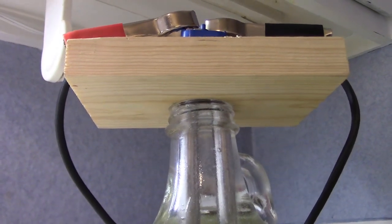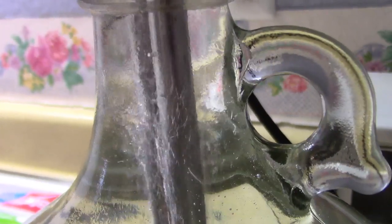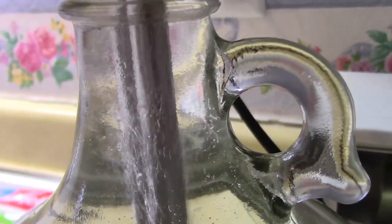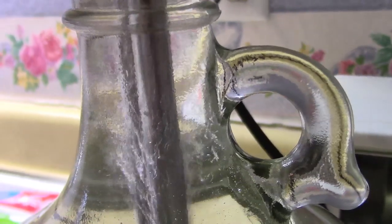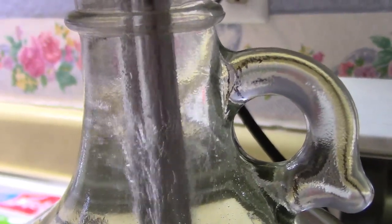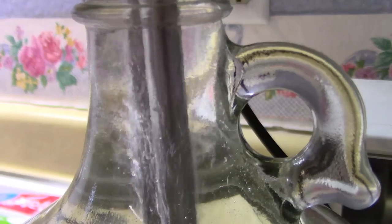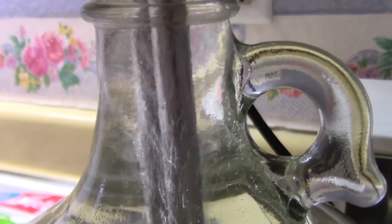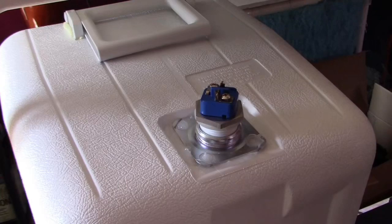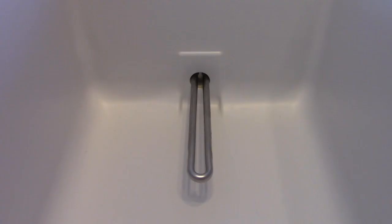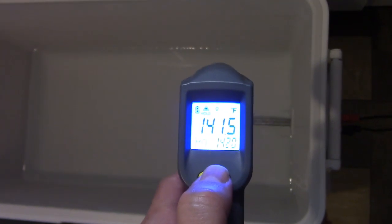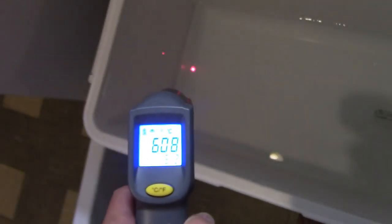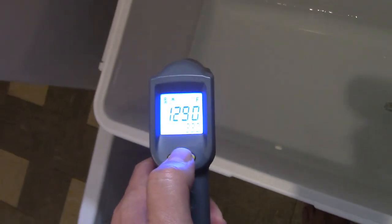I mounted that in an ice chest and then did experiments anywhere from two and a half gallons for dishwashing all the way up to six to seven gallons for the off-grid PVC showers, not that hot though, just to a hundred for the shower and about 130 to 140 for three gallons.